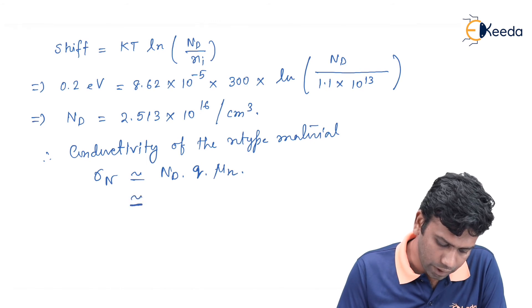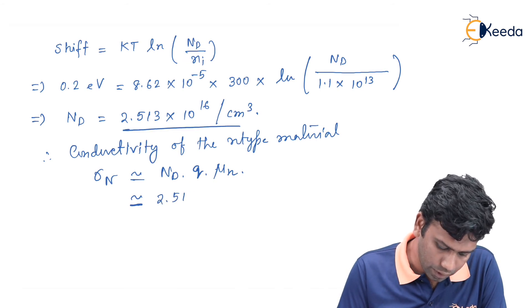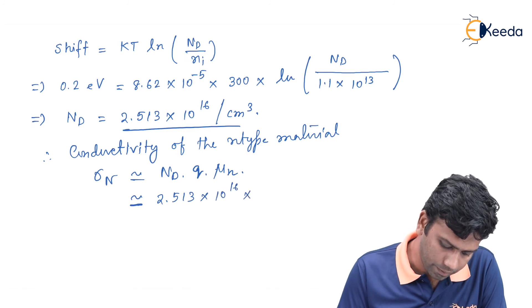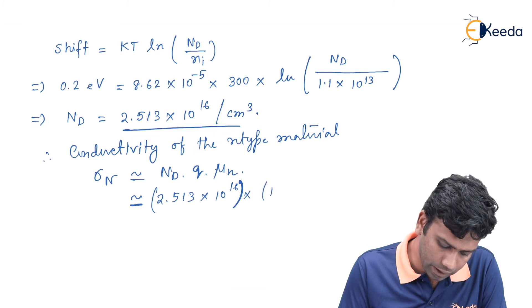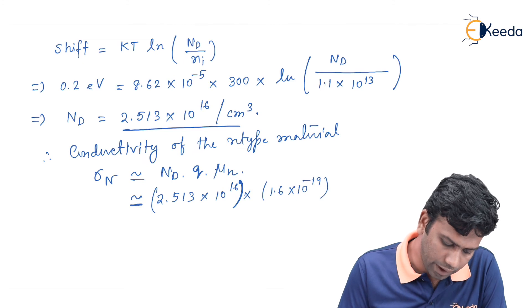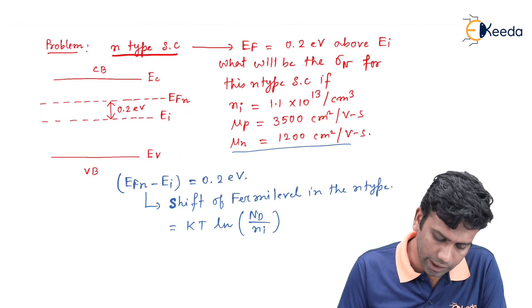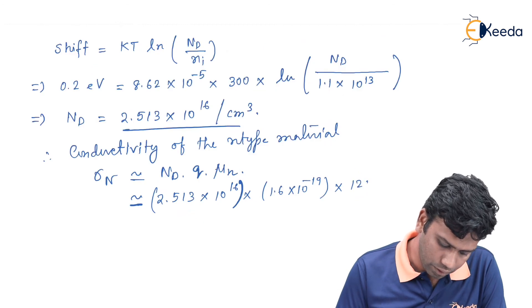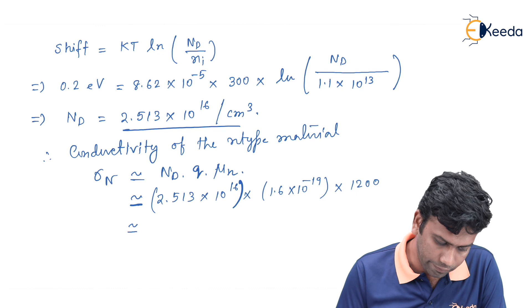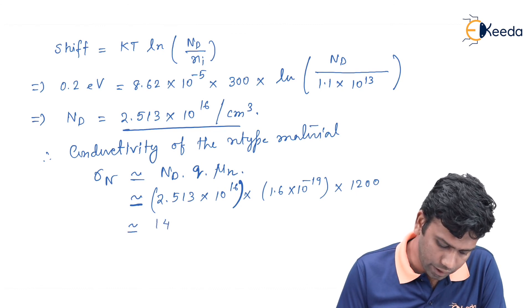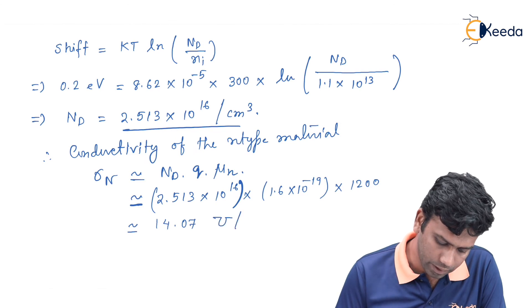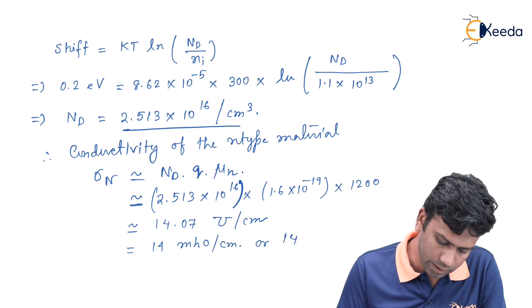This Nd value we have found this value as 2.513 into 10 to the power 16, and the q value is 1.6 into 10 to the power minus 19, and mu n value is given by 1200 centimeter square per volt second. If we do the calculation, then we can find it will be 14.07 mho per centimeter, or we can write it as nearly 14 mho per centimeter or 14 siemens per centimeter.